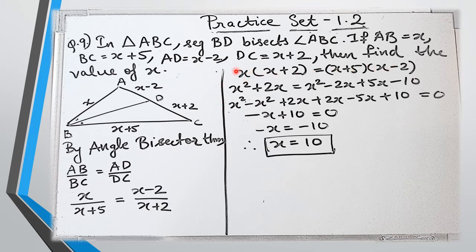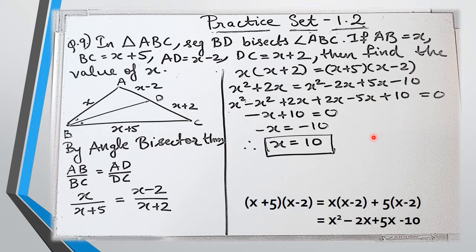Opening the left side: X squared plus 2X. For the right side, expanding X plus 5 into X minus 2: we get X into X minus 2 plus 5 into X minus 2, which gives X squared minus 2X plus 5X minus 10.